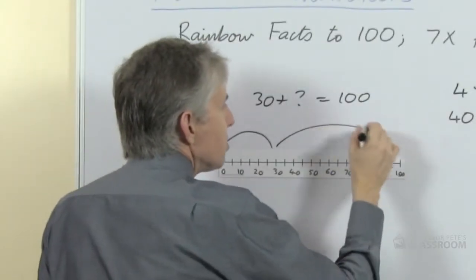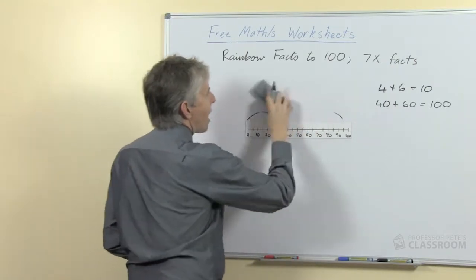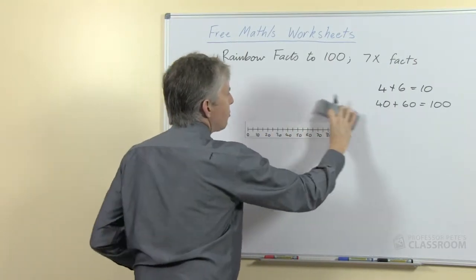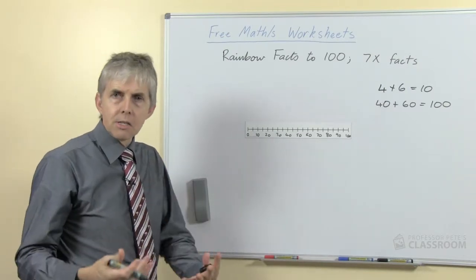But that's only looking at multiples of 10. Obviously we've got a lot of other numbers between them, so if we have numbers comprised of tens and ones, we can extend the same thinking.